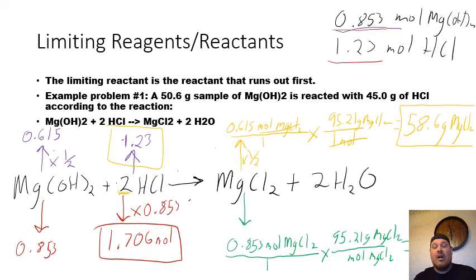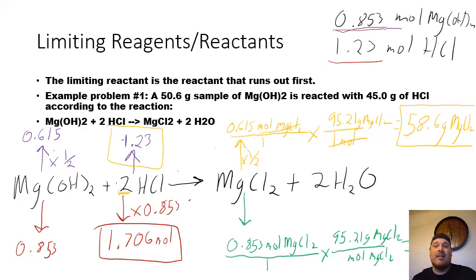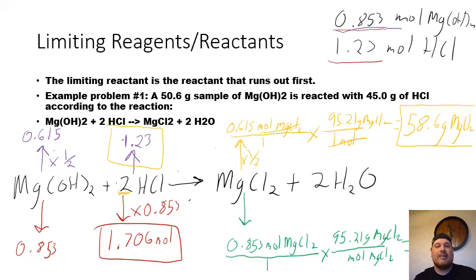I'll put a couple of practice problems up, and I'll make another video showing an example where it isn't as easy as just picking the reactant with the largest coefficient. To restate it: when I use 45.0 grams of hydrochloric acid, the amount of magnesium chloride predicted is 58.6 grams. Magnesium hydroxide would be in excess. If you wanted to figure out the amount of excess, you simply take the 0.615 moles, convert that into grams, and subtract it from the original 50.6 grams — then you know exactly how much excess magnesium hydroxide was used. Hopefully this helps. I'll put another video out shortly.